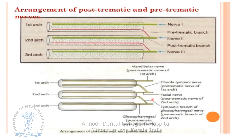Each pharyngeal arch is supplied by a nerve derived from the hindbrain, which supplies the skeletal muscles of the arch and provides sensory branches to the overlying ectoderm and endoderm. In lower animals, each arch is supplied by two nerves: a post-trematic nerve running along the cranial border, and a pre-trematic nerve running along the caudal border. In the human embryo, double innervation is seen only in the first arch.